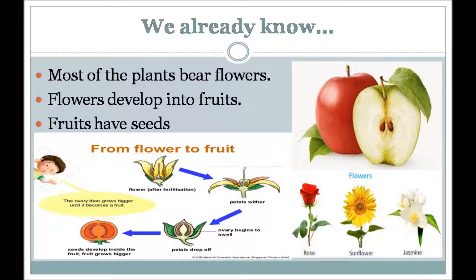Flowers of most plants change into fruits. There are seeds inside the fruits. Fruits are the fleshy part of the plant — this is the part we usually eat. Fruits cover and protect the seed of the plant. Some fruits have only one seed, like mango and apricot, while other fruits have many seeds, like orange and papaya.